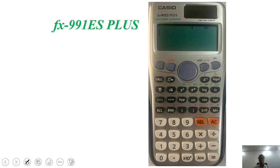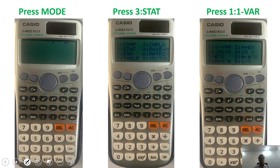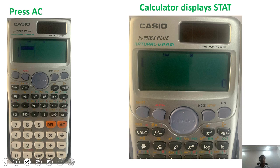First you need to set up that calculator. To do that, press mode. If you press mode, you will see 3 statistics. So you can select that, and then select 1 for VAR.